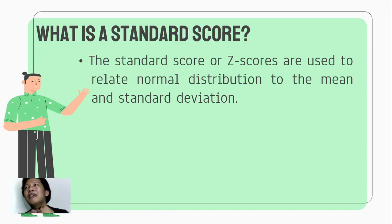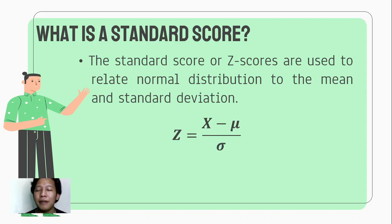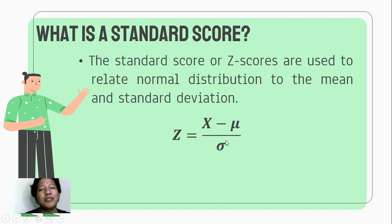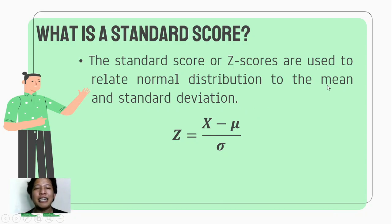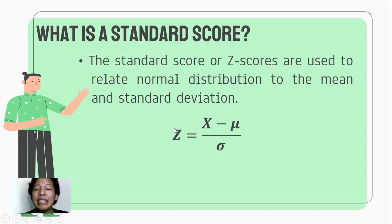In converting a normal score into a z-score or standardized score, we are given the following formula: z, the standard score, equals the normal score x minus the mean, divided by the standard deviation. Two important values to use here are the mean and the standard deviation, since we are relating the standard distribution to the normal distribution.